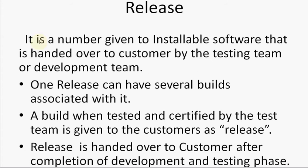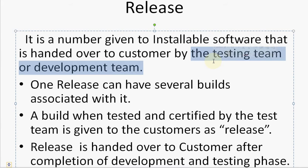A release is a number given to installable software that is handed over to the customer by the testing team or the development team — or both — because every company works differently. Before the software is handed over to the customer, it is either the testing team, or both the testing team and development team, that decide whether this release can go to the customer. Sometimes a specific team of selected members from testing, development, and business analysts makes that decision.